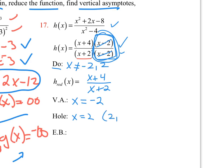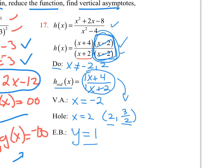Now we should find the y-coordinate of the hole. To find it, go to the reduced form and plug in x equal to 2. If you plug in 2 you get 6 over 4, which is 3 halves. So to find a hole, take the x-value and plug it into the reduced form to get the y-coordinate. For end behavior, since we have the cancellation, look at the reduced form's leading terms — both are 1 — so we get y equal to 1 as the end behavior.